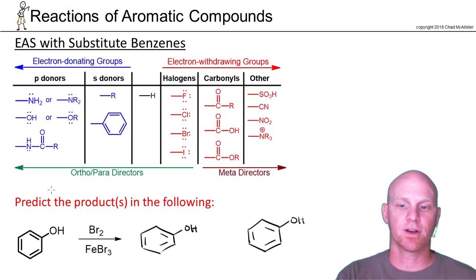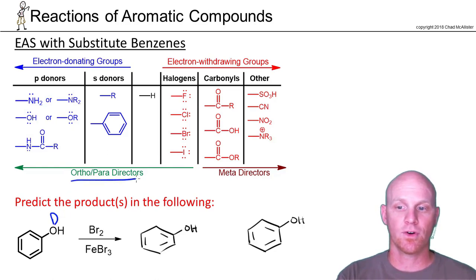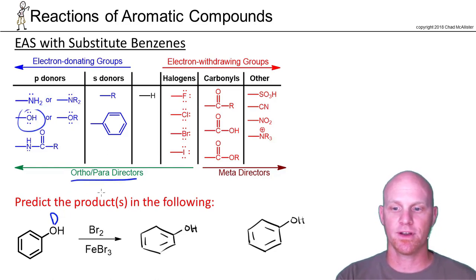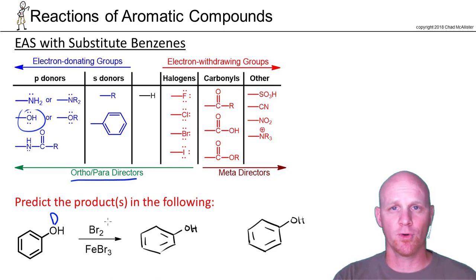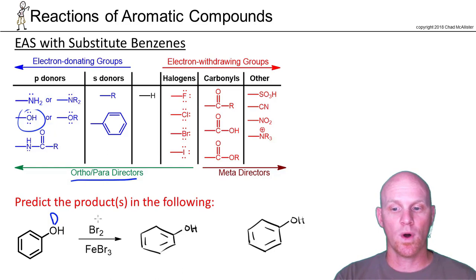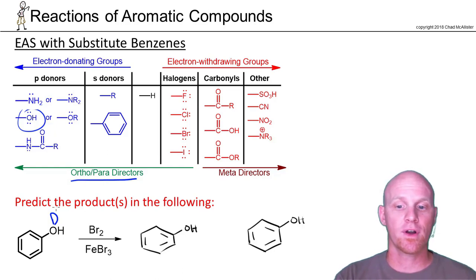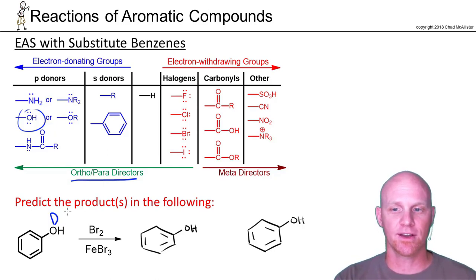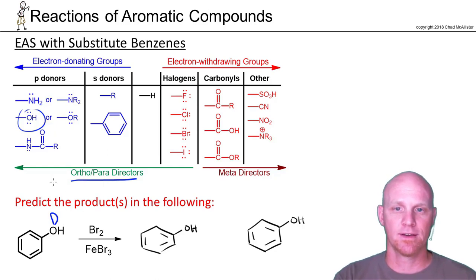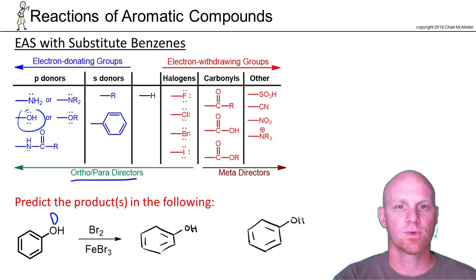In this next example, we've got a hydroxyl group, and you have to realize that is a donating group and it's also an ortho-para director. In this case, Br2/FeBr3 — we're going to be adding a bromine. One big mistake students often make is they think that whatever we're adding does the directing, but it's already what's on the benzene ring that's going to do the directing. The OH says whatever's coming on is going ortho-para to it.